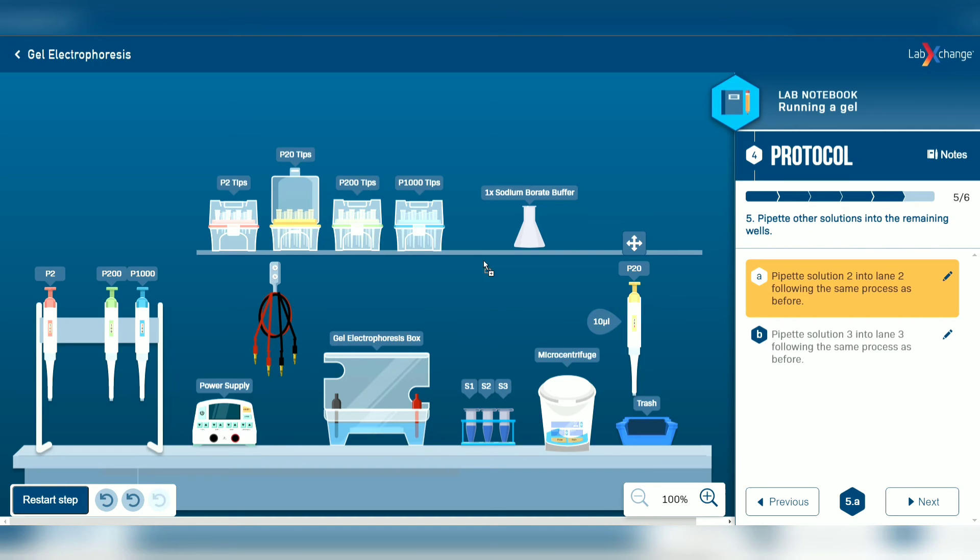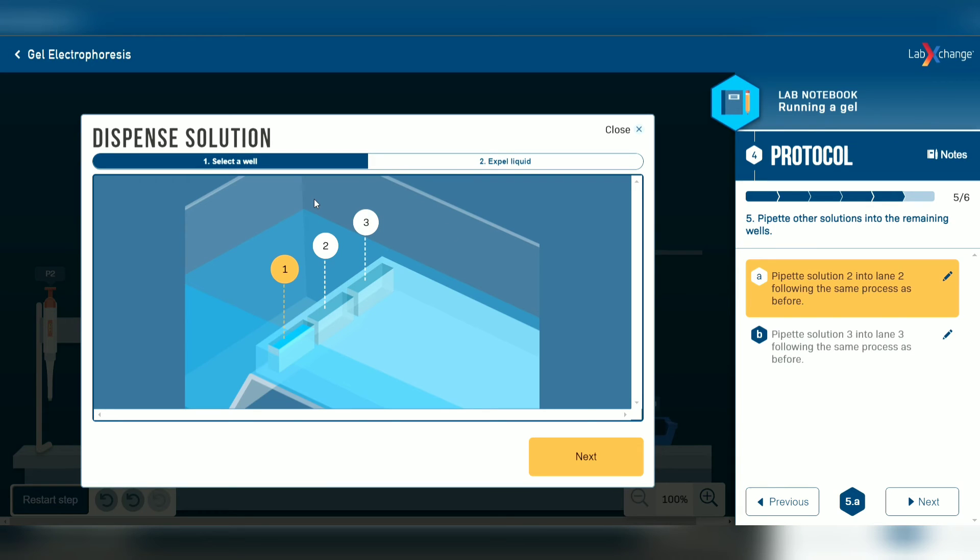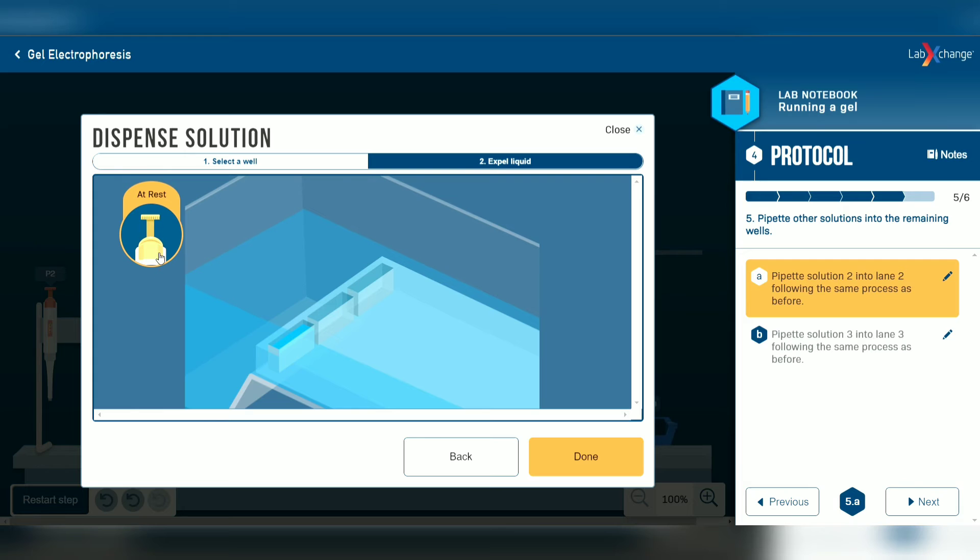By using a new tip, transfer the S2 solution to the agarose gel. As the previous step, we only press until first stop.